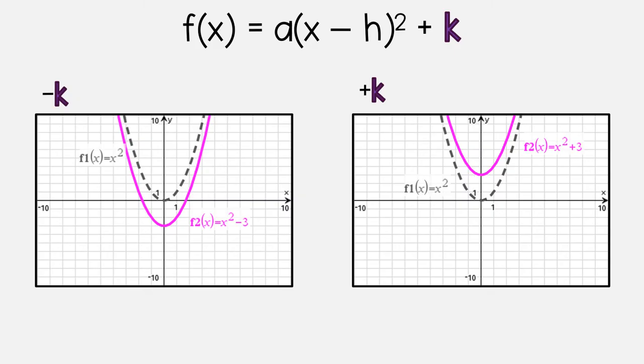And then last, what happens when you have a number in the k spot? What makes k different than h is that k is not inside the parentheses. It is on the outside. And this one is more straightforward. So when k is negative, so when you have minus k at the end, looking at the vertex, you go from the gray to the purple 1, 2, 3, but down. So when you have a minus sign, you're going to shift down.